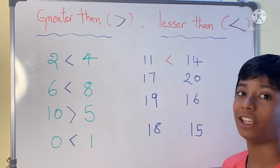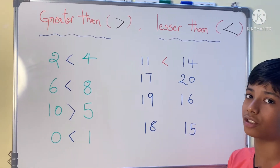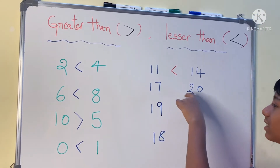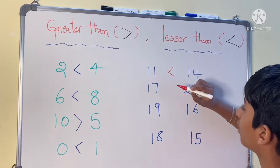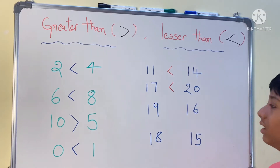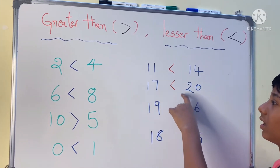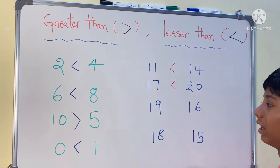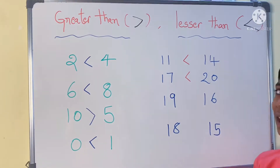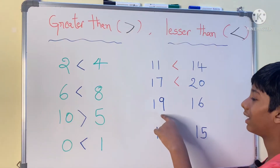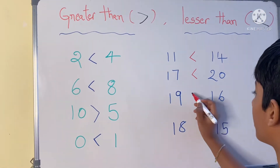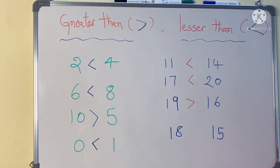So seventeen and twenty: which is big and which is small? Seventeen is lesser than twenty. Why is it lesser? Because twenty is big and seventeen is small. Now nineteen and sixteen: which is big and which is small? Nineteen is greater than sixteen.